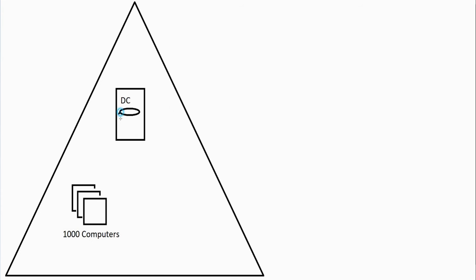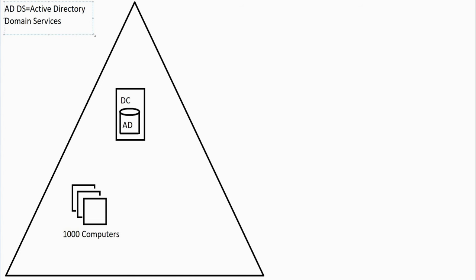This little cylinder represents my Active Directory database — AD. What we still call it to this day is ADDS, Active Directory Domain Services. Usually, if you hear that term 'Active Directory Domain Services,' it means it's an on-premises domain.